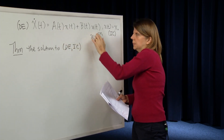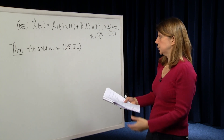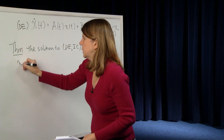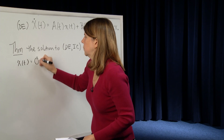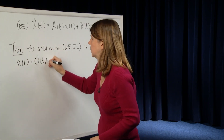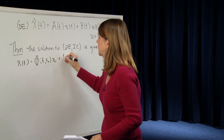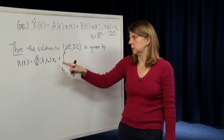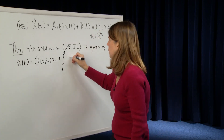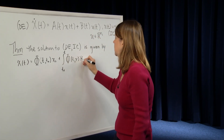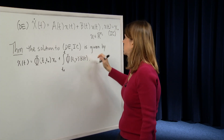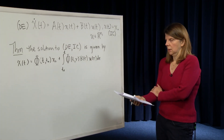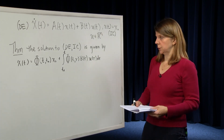The solution to that differential equation with initial condition x-zero is given by: x of t equals phi of t comma t-zero times x-zero, plus the integral from t-zero to t of phi of t comma tau times B of tau times u of tau d-tau. The first term is the contribution from the initial state, and the second term is the contribution from the input, where tau is the dummy variable of integration.